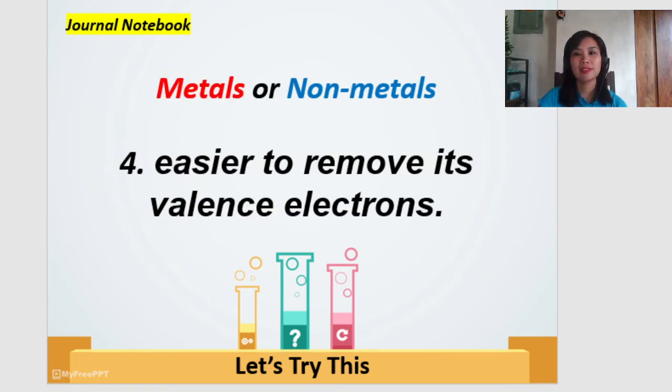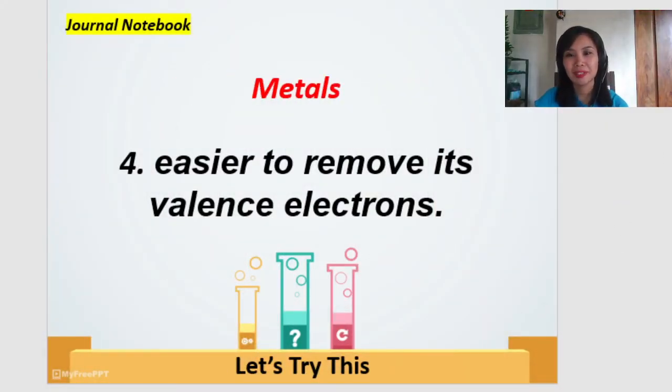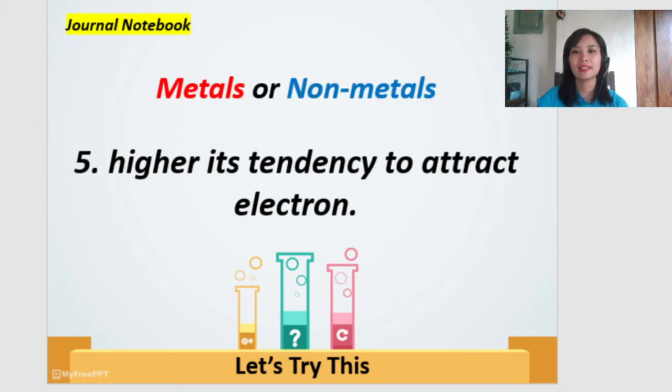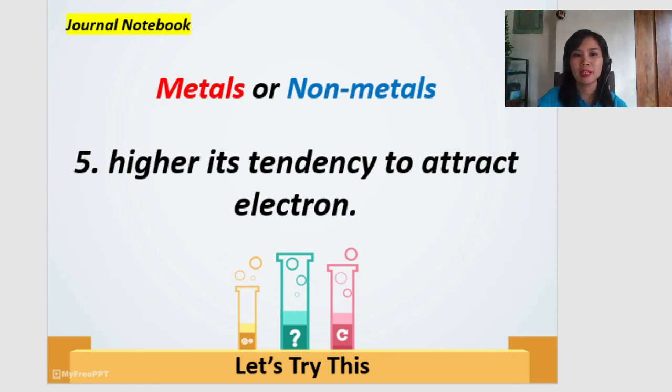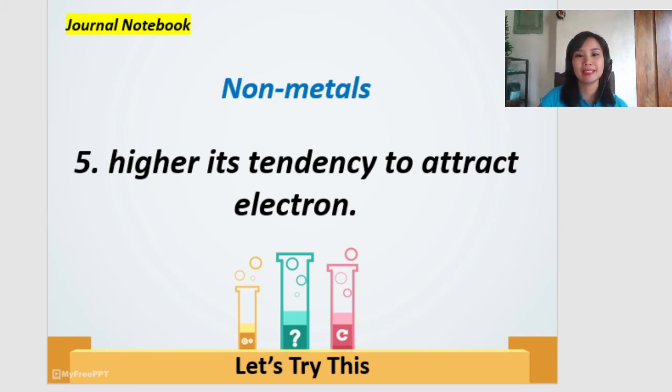Easier to remove its valence electron. Ready? Go. Number five. So, what do you think is the correct answer? That is, metals. Again, they are easier to remove valence electrons. Next, number five. Higher its tendency to attract electrons. Is it the metals or non-metals? Ready? Ready? Go. Okay. Time is up. So, what do you think is the correct answer? Very good. They are the non-metals.